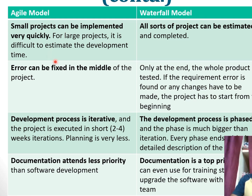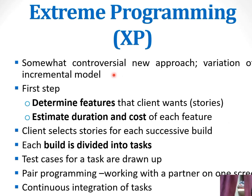Smaller-range projects can be implemented very quickly in agile, while all sorts of projects can be implemented efficiently in waterfall. During the middle of an agile project, it is possible to fix output, but in waterfall, errors can only be recovered after testing or from customer feedback at the end. The agile development process is iterative-based while waterfall is phase-by-phase. Agile gives very less priority to documentation, whereas documentation is a top priority in waterfall.